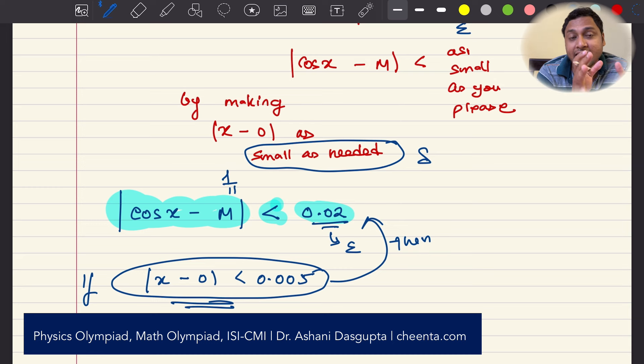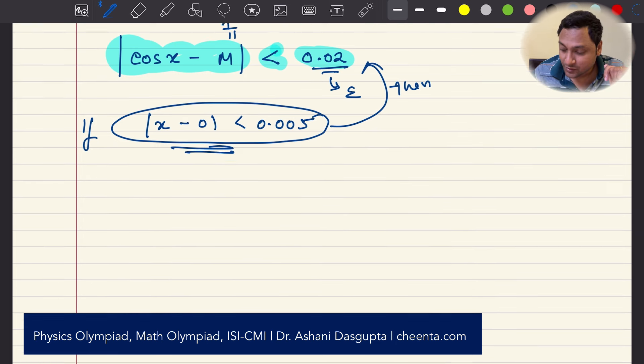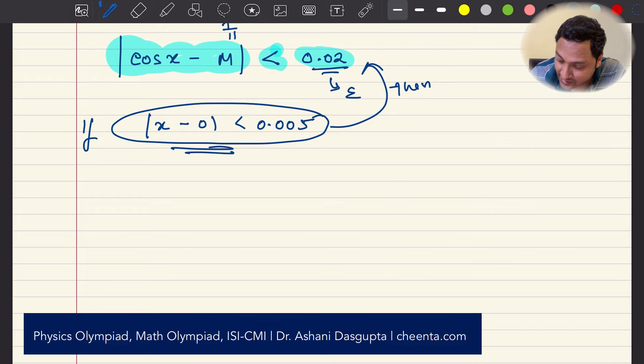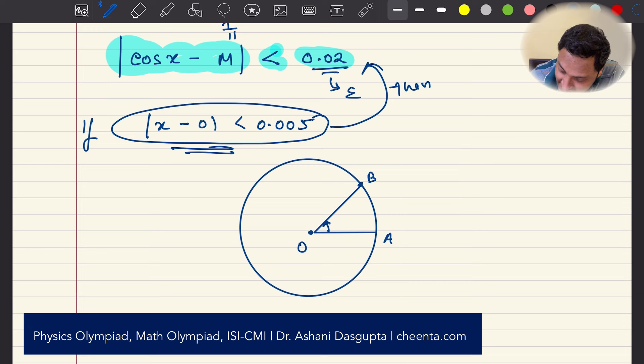Cosine of X and 1 these two numbers get very close when you make X and 0 as small as you want. So one way to see it is like this if you look at a unit circle, let's say this is O and this is A and this is B. So the angle is X and you know that the cosine of X is OM right I have talked about this a moment ago.